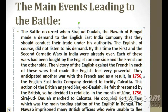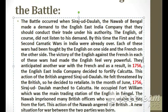The Battle of Plassey occurred when Sirajud Daula, the Nawab of Bengal, made a demand to the English East India Company that they should conduct their trade under his authority. The English did not listen to his demand. By this time, the First and the Second Carnatic Wars in India were already over. Each of these wars had been fought by the English on one side and the French on the other. The victory of the English against the French made them feel very powerful, and in 1756, the English East India Company decided to fortify Calcutta. This angered Sirajud Daula.